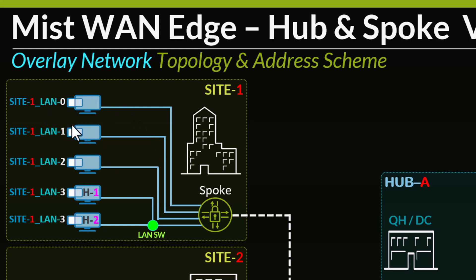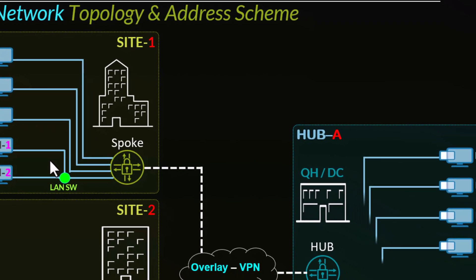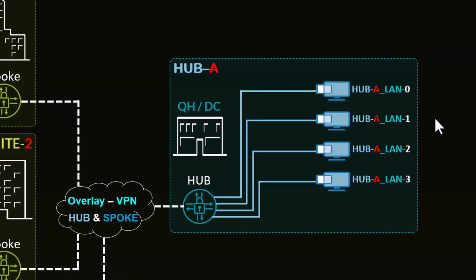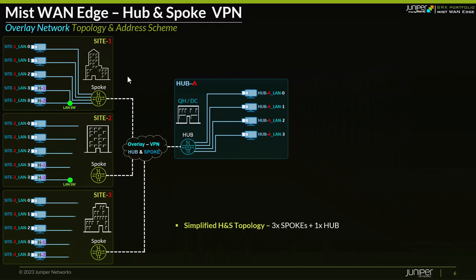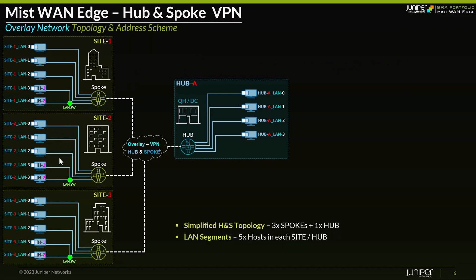In my topology, I'm going to have five different hosts emulating different LAN prefixes in each and every site. You can see LAN 0, LAN 1, 2, and 3. In LAN 3, I'm showing two separate host devices connected through a layer 2 switch. On the hub, we'll have a similar topology with up to four hosts — LAN 0, 1, 2, and 3 — and the same will be replicated across site 2 and site 3.